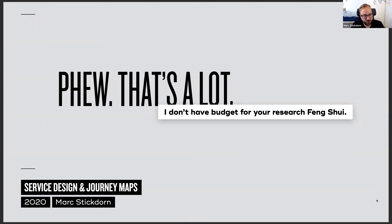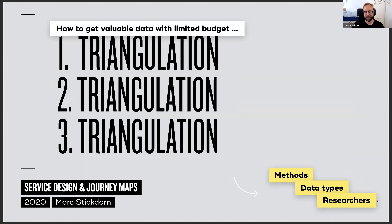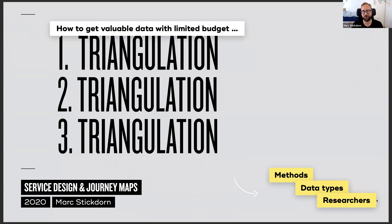One big tip: how do you get good quality results with limited budgets? A concept called triangulation, going back to academia in the 1970s, is key. Every research method has a bias. The only way to level out those biases is by using different methods. In an interview, people will never tell you the full truth — they give socially acceptable answers. People also behave differently when they know they're being researched. So use different research methods together.